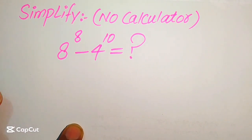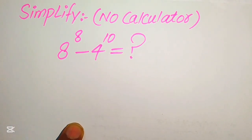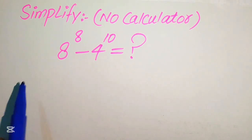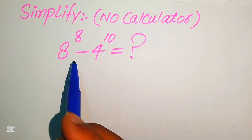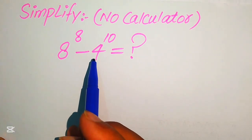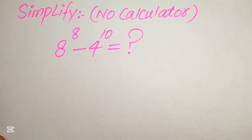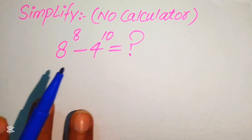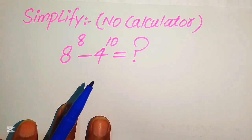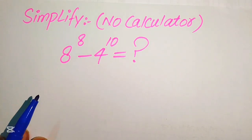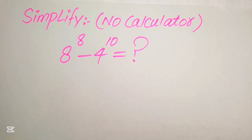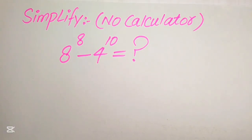Hello everyone. How to simplify this nice algebraic expression: 8 to the power of 8 minus 4 to the power of 10. We need to write this algebraic expression in simplified form. Note that a calculator is not allowed in this problem, which means we will show all of the working on this paper.